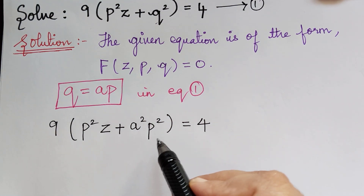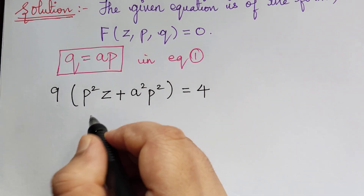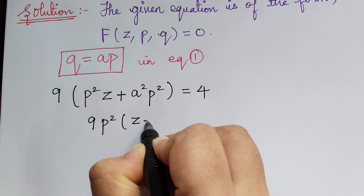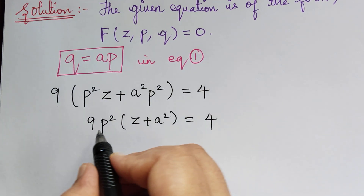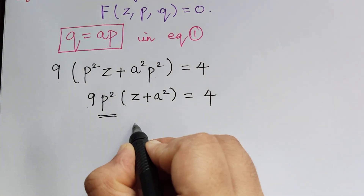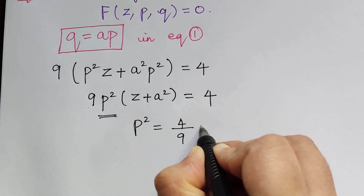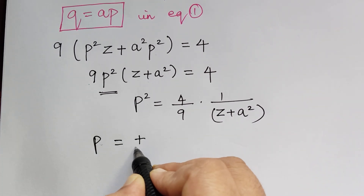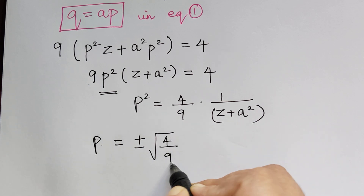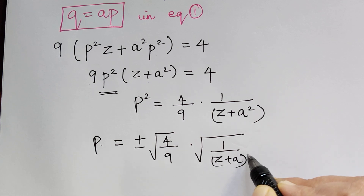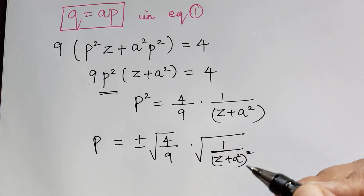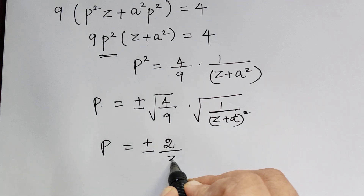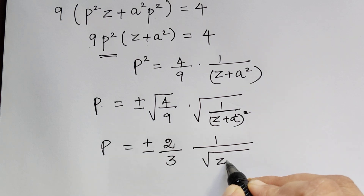After making the substitution, we solve for p. We have 9 multiplied with p squared times (z plus a squared) equals 4. Taking p squared to the left and everything else to the right, p squared equals (4/9) multiplied by 1/(z plus a squared). Therefore, p equals plus or minus 2 divided by 3, multiplied by 1 divided by the square root of (z plus a squared).